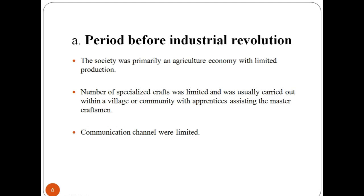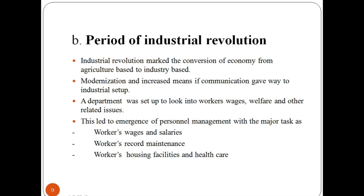The evolution of human resource management can be classified into three categories. In the period before the industrial revolution, society was primarily an agricultural economy with limited production. The number of specialized crafts was limited and was usually carried out within a village or community. Communication channels were also limited during this period.